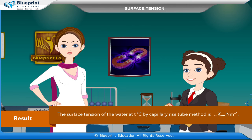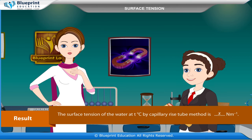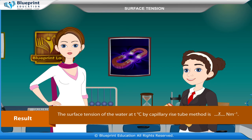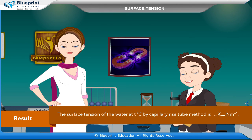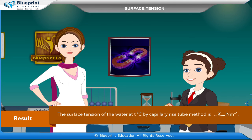Result: The surface tension of water at T degrees Celsius by the capillary rise method is x N m⁻¹.